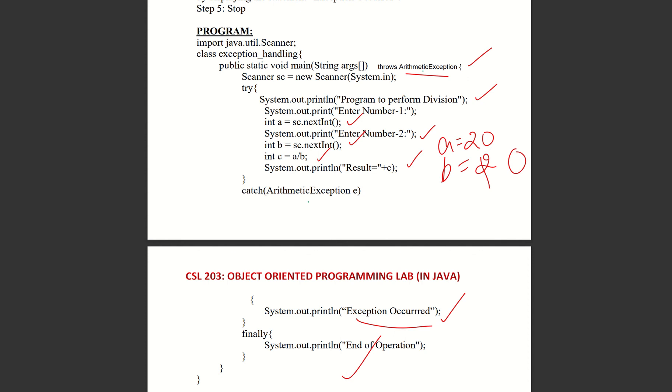The end of operation is performed. The exception is generated and handled. Finally executes and prints 'end of operation'. The statement is printed as output.